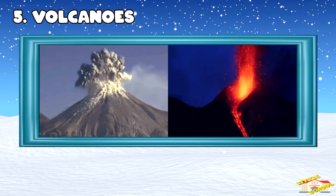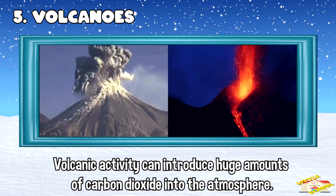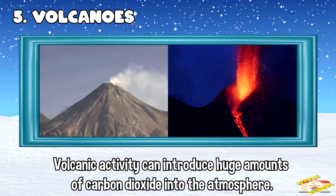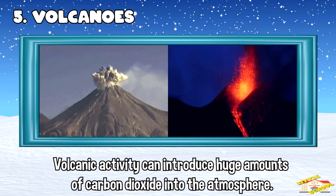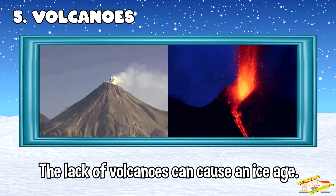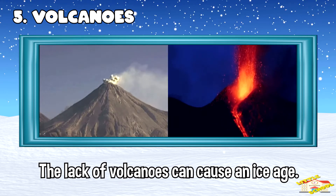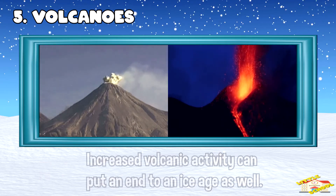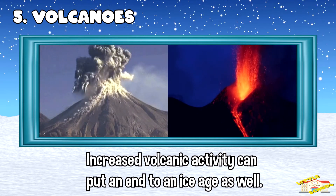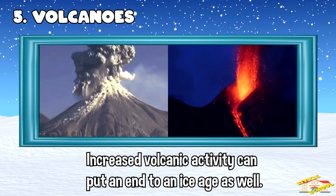Volcanoes: volcanic activity can introduce huge amounts of carbon dioxide into the atmosphere. The lack of volcanoes can cause an ice age, while increased volcanic activity can put an end to an ice age as well.